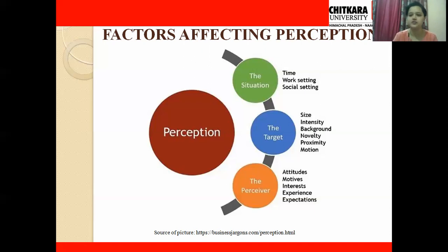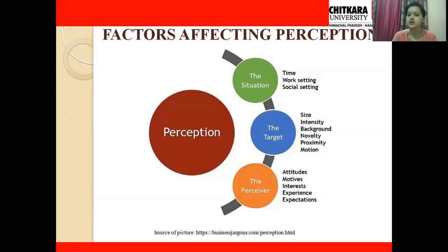Next is the perceiver — the individual or human being. If our attitude, motives, interest, experience, or expectations are not in a particular manner, we are not going to perceive things properly. For example, if I'm not motivated today, I'm not feeling well, I'm ill and lying in bed, I'm not focusing on things as much as when I'm feeling energetic. I won't be able to perceive things properly, won't pay my attention to stimuli as much. Our attitude and motives can affect our perception and can cause mistakes in perceiving things.